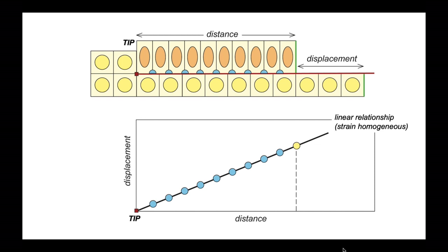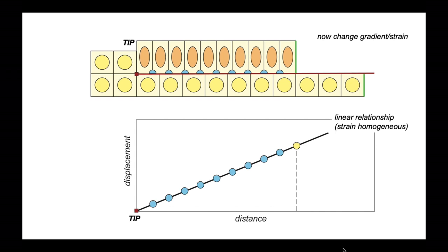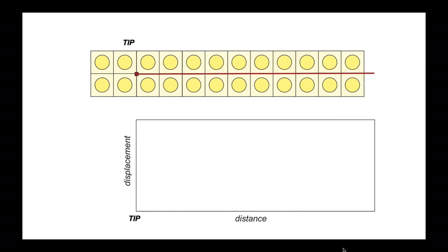And it's a linear relationship. This is because the strain above the fault plane in the hanging wall is homogeneous. Let's do this again but change the gradient of displacement along the fault plane and, consequently, the strain in the hanging wall.